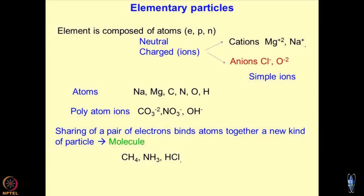Coming to elementary particles: all of you know elementary particles are electron, proton, and neutron. Depending upon the charge, we have neutral systems or charged systems, and charged systems are known as ions. Ions can be of two types — cations and anions. Cations are positively charged: magnesium, sodium, potassium, calcium, iron, and so on. Anions include chlorides, oxygen, hydroxyl (OH⁻), and so on. We will also differentiate between simple individual ions and group ions such as the ammonium ion (NH₄⁺).